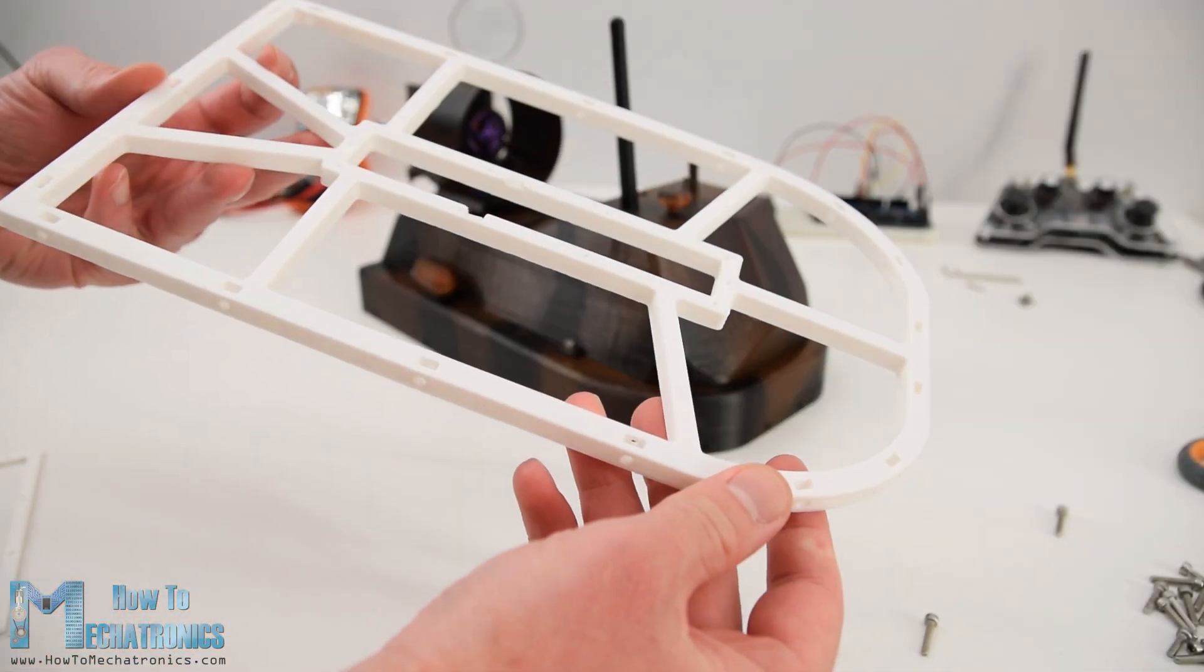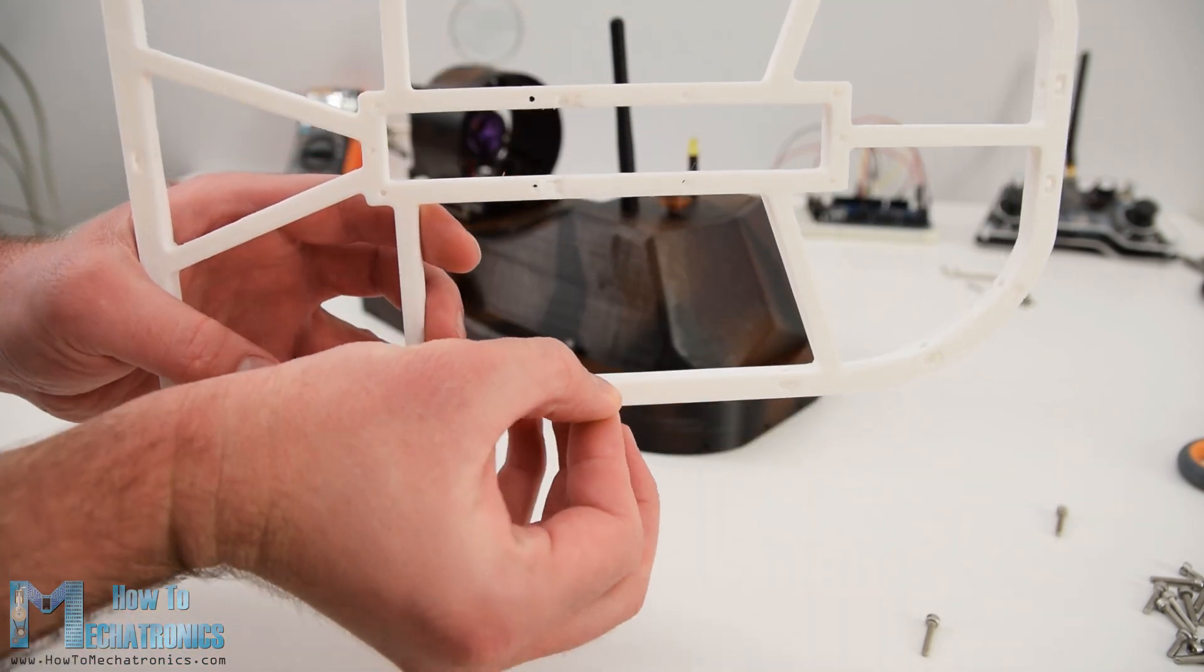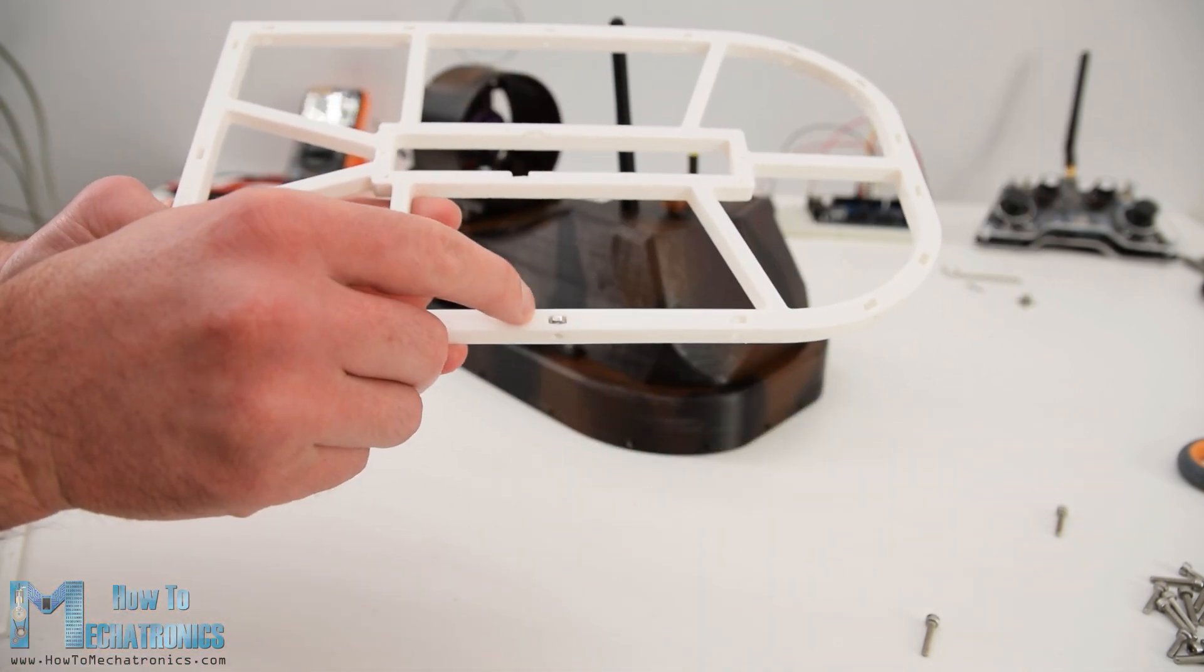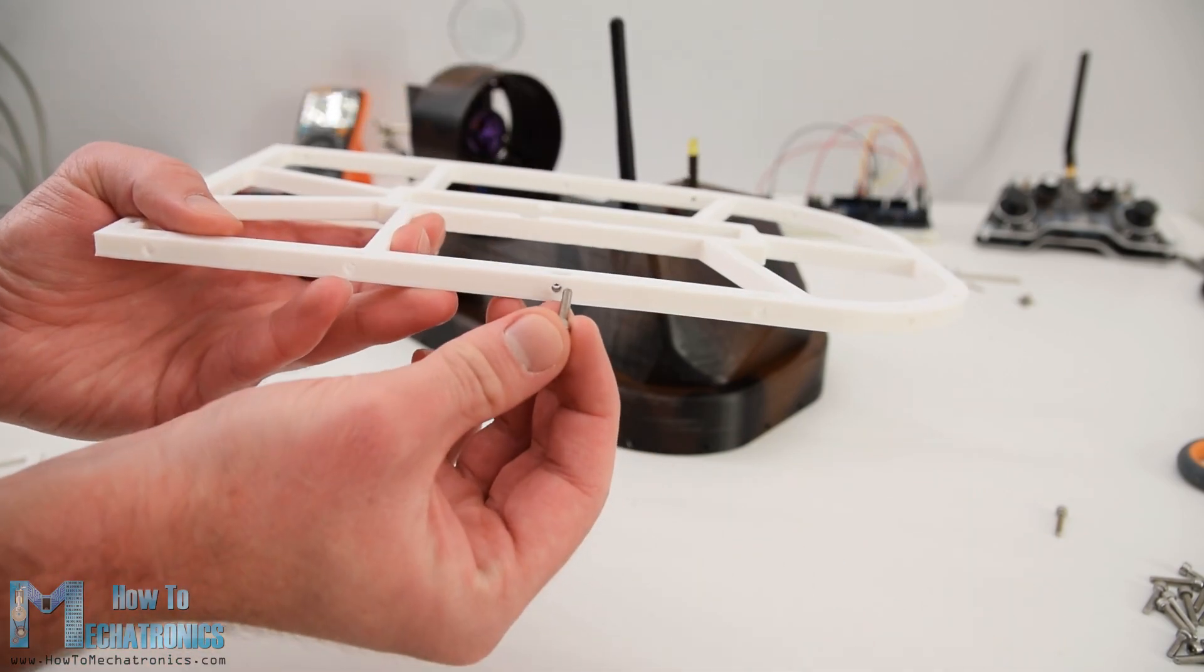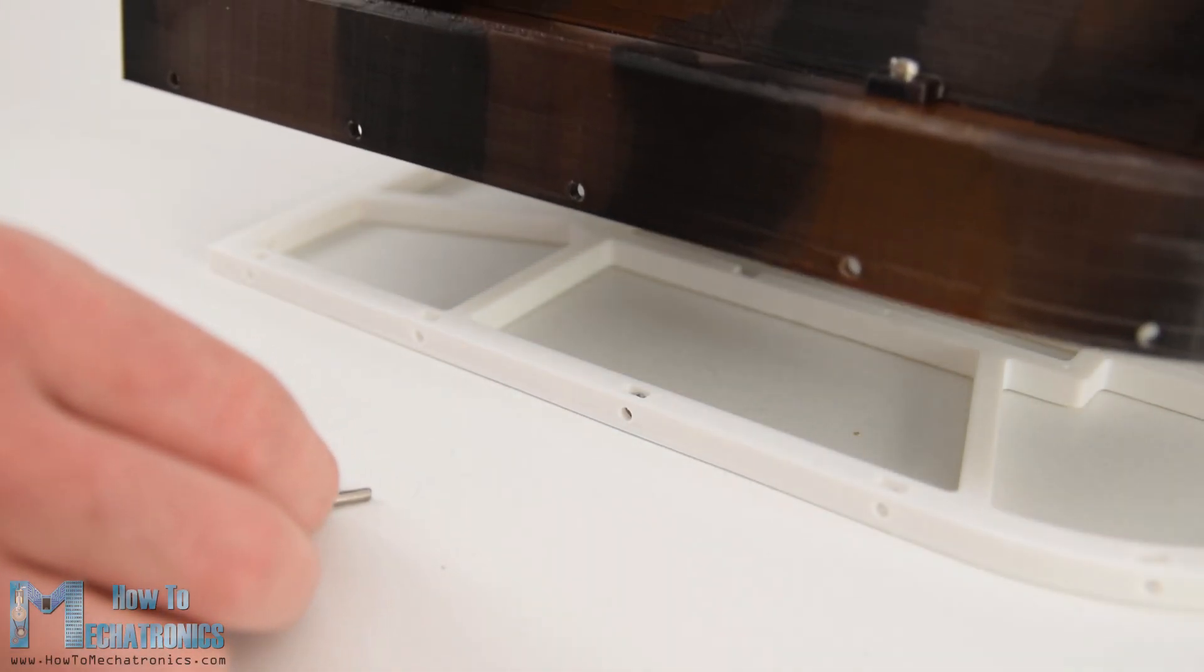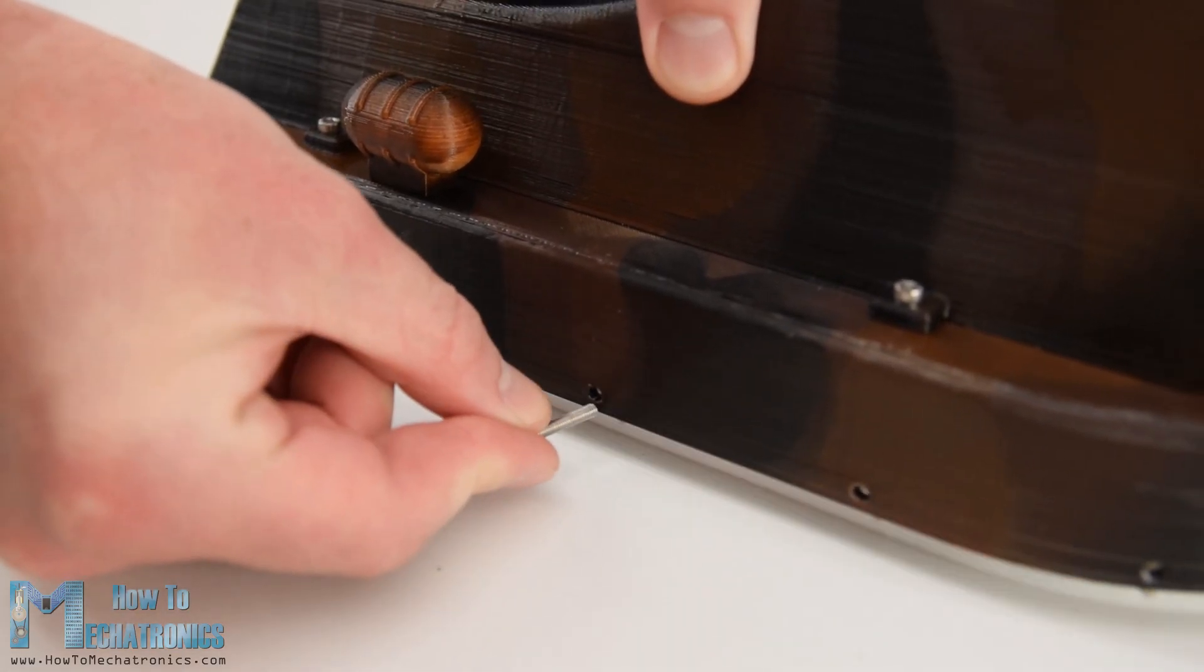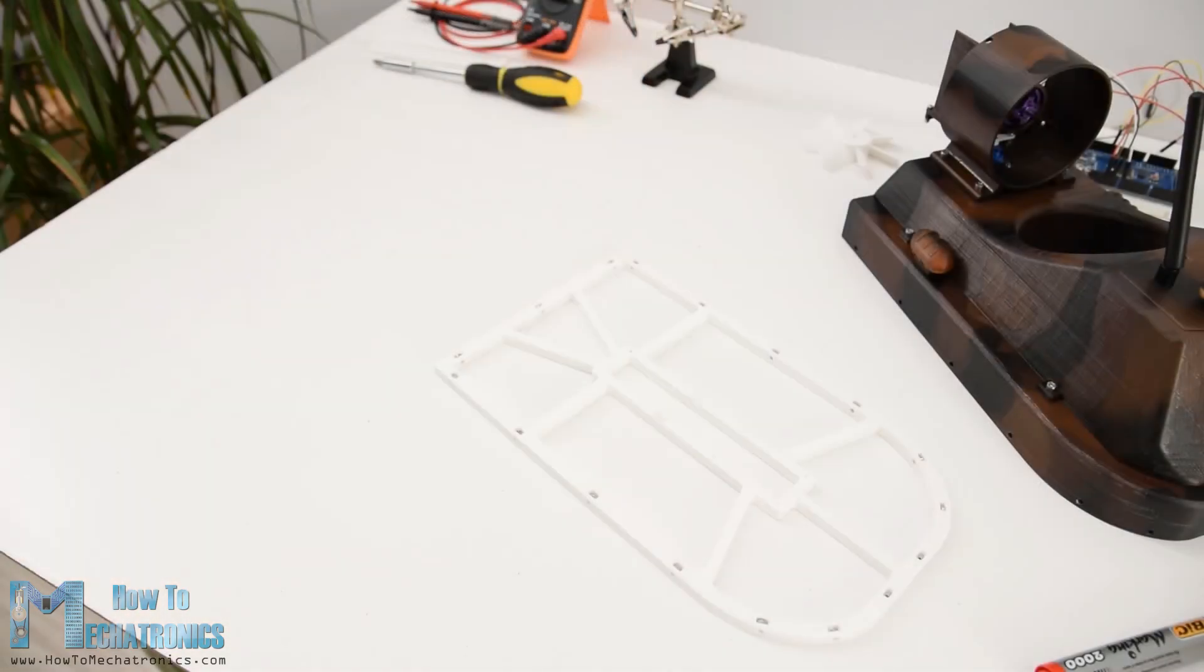You can notice here that the skirt holder has holes around it and that's for attaching it to the hull. There are also slots for nuts to be placed in and in that way we will be able to easily secure the skirt holder to the hull using M3 bolts.